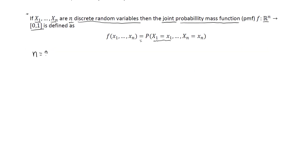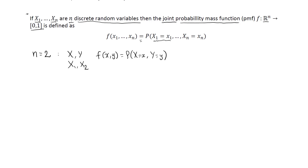In the case of n equal to 2, we can use either x1 and x2 for the two random variables, or more commonly, x and y. For this simpler case, the probability mass function becomes a function of just two variables, defined as the probability that X equals x and Y equals y. We can equally call these random variables x1 and x2 and define the PMF as f of x1 and x2.